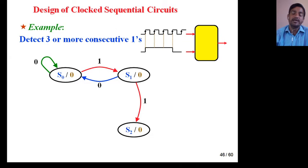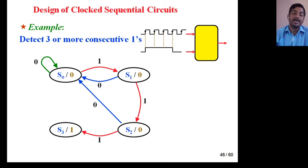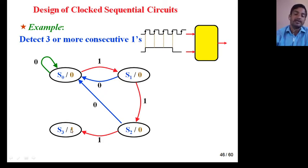Again, output is 0 because we have not yet detected three or more consecutive ones. If x equals 0, it returns to S0. If x equals 1, it goes to the next state S3. Now we have detected three ones — one, two, and three — so output is high. Up through S2 we detected only two ones, so output was low.